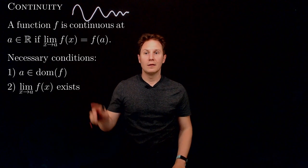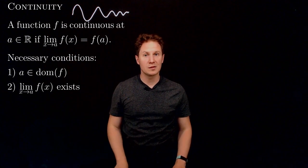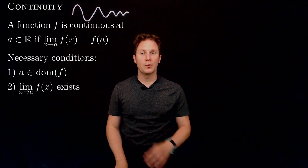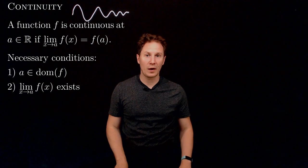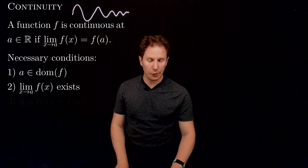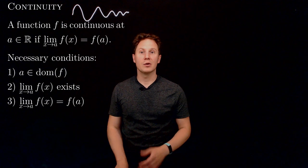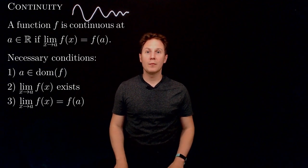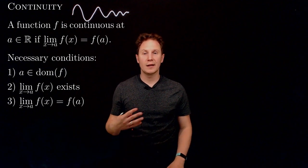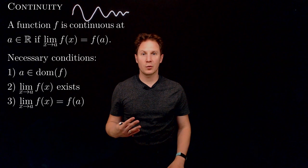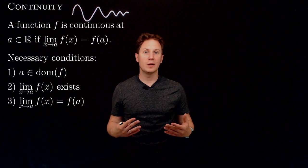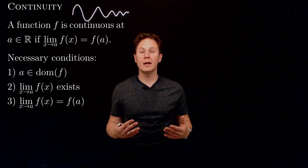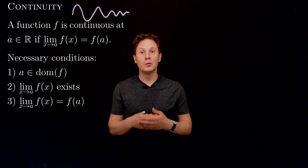Second, the left-hand side in the relation also needs to make sense, so the limit as x approaches a of f of x needs to exist. And third, the relation of course must also hold, so that the two numbers you get — by taking the limit as x approaches a of f of x and evaluating the function at x equals a — need to be equal.